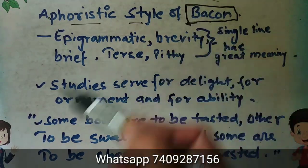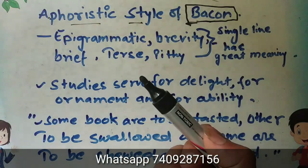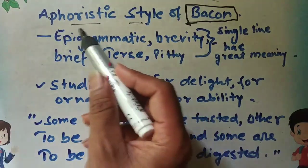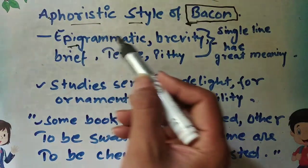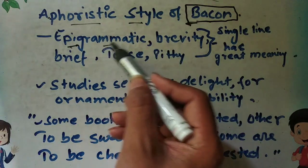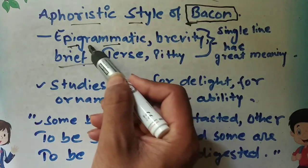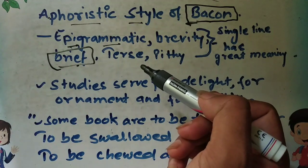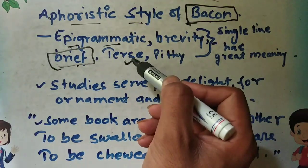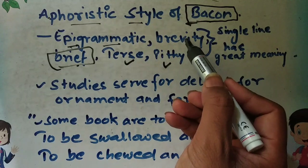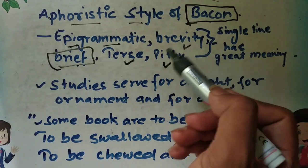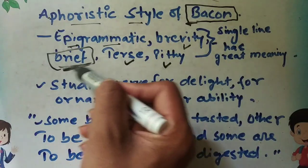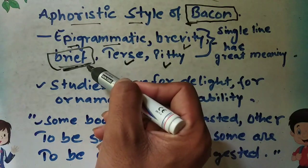So he used a new style of writing called aphoristic style. What is aphoristic style? Simply, aphoristic style is epigrammatic — it is brief. When you go through the definition of aphoristic style, you will see words like terse, pithy style, and you will find brevity in the work.